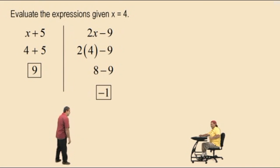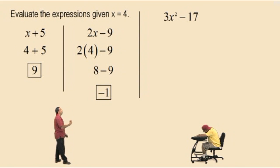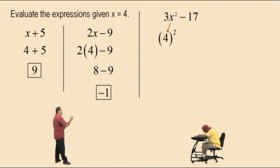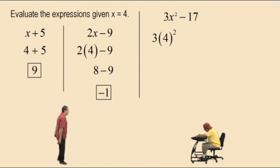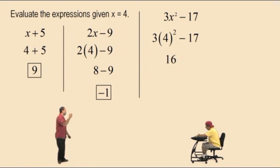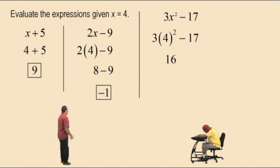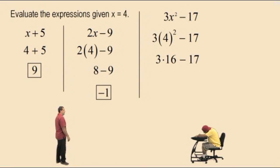Now let's do another one: 3x squared subtract 17. Notice the variable x is being squared. We first start by replacing the x with a 4, and don't forget it's squared. It's being multiplied by 3 because it's 3x squared. And don't forget to subtract 17. Order of operations says we must do the exponent first — 4 squared means 4 times 4, which is 16. So we have 3 times 16 subtract 17.